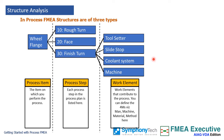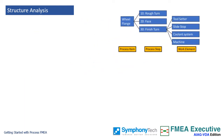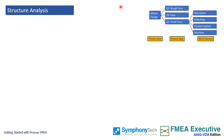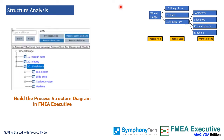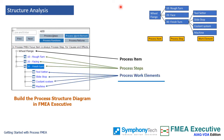You would typically define four M's — namely man, machine, methods, and materials — that enable the process as work elements. There can be a variety of work elements that you can define. The example shows a structure tree built in the structure tree view. Note the different levels at which process items, process steps, and process work elements appear in the structure tree.